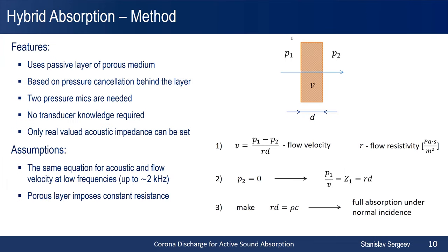After understanding how the actuator produces sound, let us move to active sound absorption. We decided to implement the hybrid absorption technique, because it doesn't require any analytical model of the actuator behavior. It uses a passive porous layer and relies on active pressure cancellation behind it. Under the pressure difference, the velocity through the porous layer is defined by its resistance. If by any means the pressure behind it is equal to zero, the front impedance P1 over V is equal to the resistance of this layer from equation 1. If we make this resistance equal to the characteristic impedance of air, then this absorber becomes a perfect one under normal incidence. The assumption of purely resistive behavior of the porous layer and the equivalence of flow velocity and acoustic particle velocity are valid only at low frequencies, shown to be true up to several kHz.